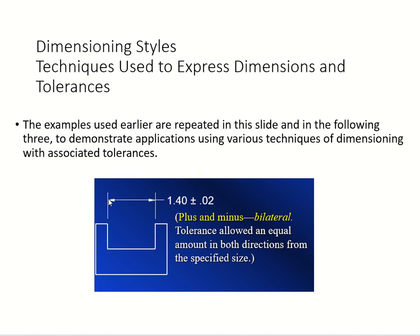The link from the end of the arrow to the end of the extension line above — this is how we dimension using tolerance. You can see the tolerance right here. You have different types: implied tolerance and stated tolerance. This one is stated.